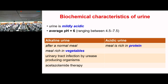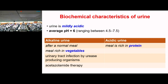Now the biochemical characteristics of urine. A key viva question: the normal pH of blood is 7.4. The average pH of urine is around 6, ranging from 4.5 to 7.5. Urine is alkaline after meals, with a vegetable-rich diet, in urinary tract infections, and with drugs like acetazolamide. A protein-rich diet (meat) produces acidic urine.